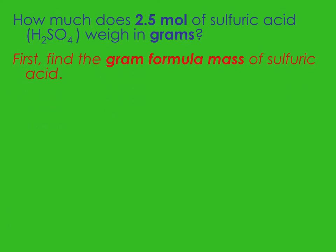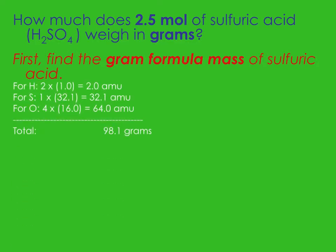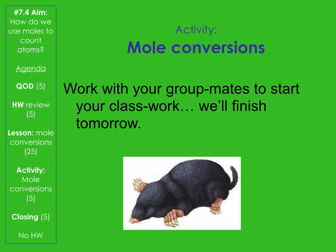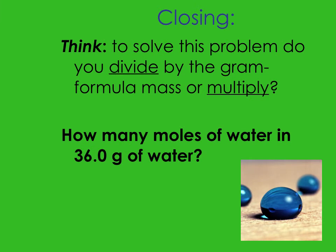If we look at this example, you find the gram formula mass of H2SO4, which is 98.1, then you use your conversion factor. Going from moles to grams, you multiply. You'll work with groupmates to start your classwork, and we can finish it tomorrow with a couple of examples together. To solve this problem: do you divide by the gram formula mass or multiply? Are you going from moles to grams, or grams to moles?